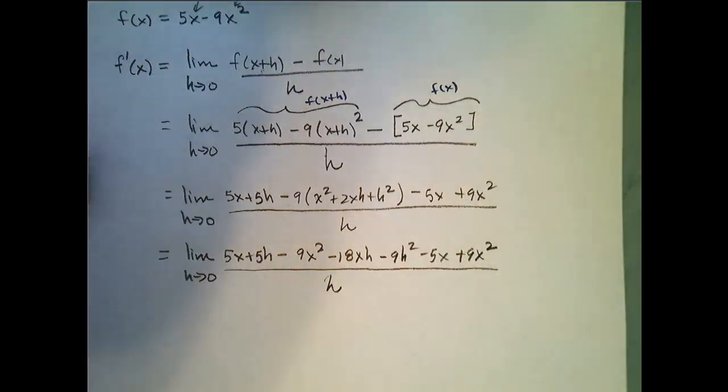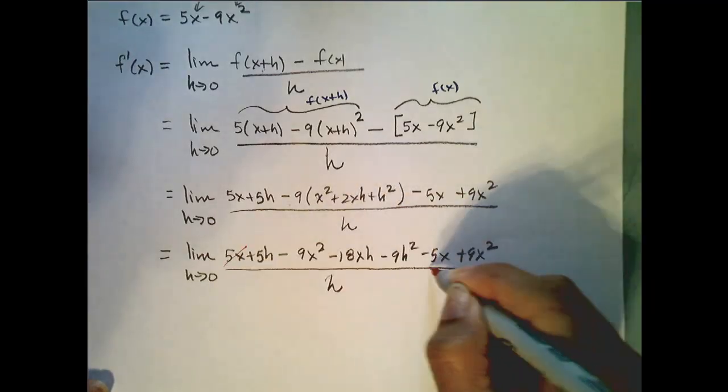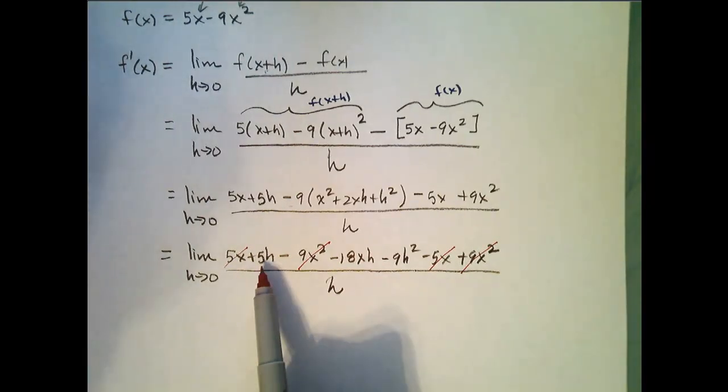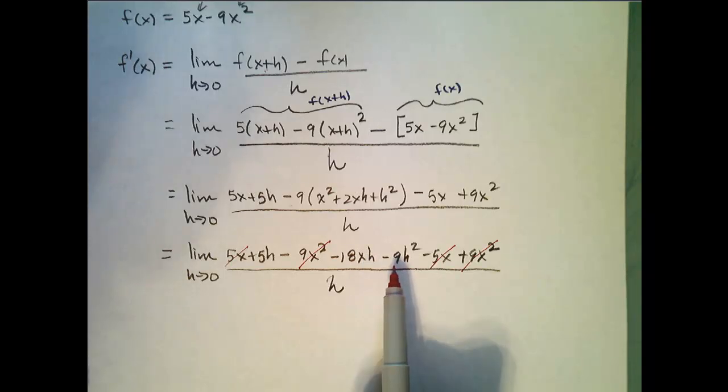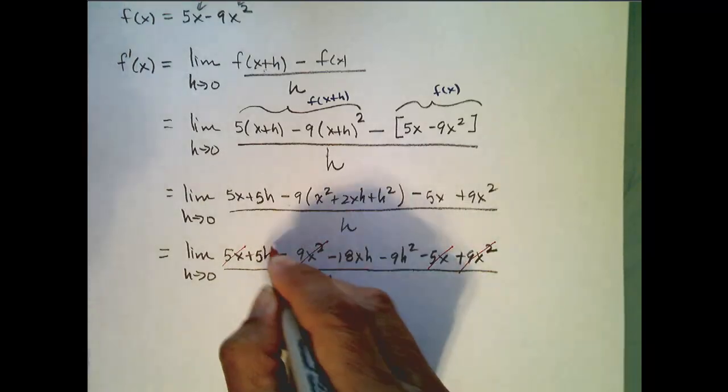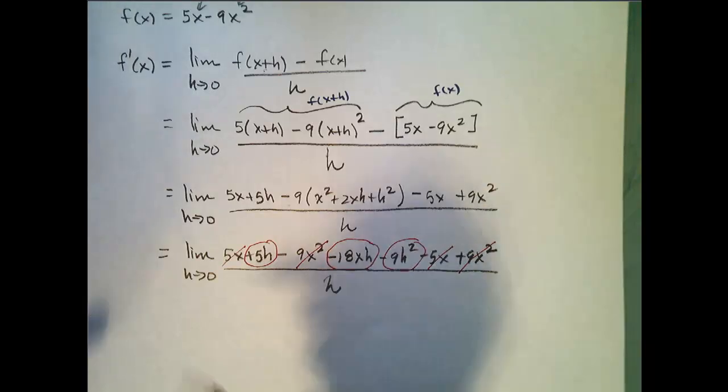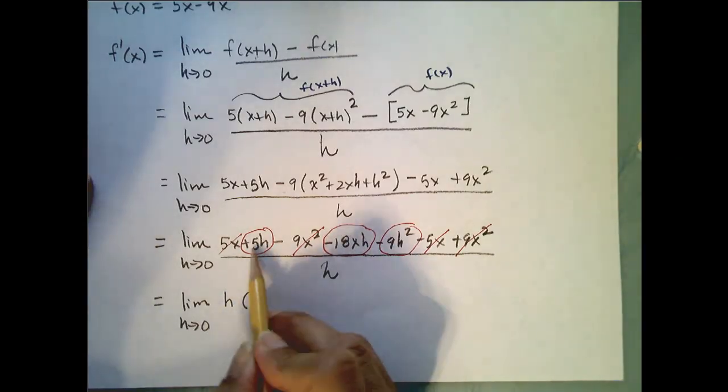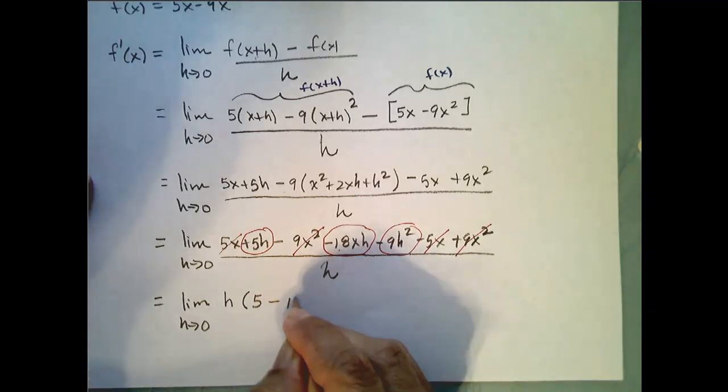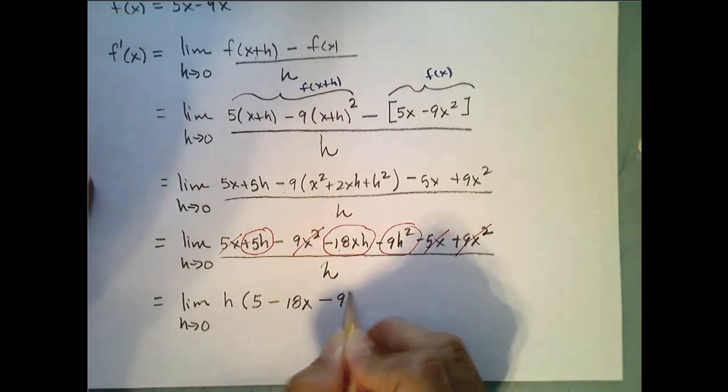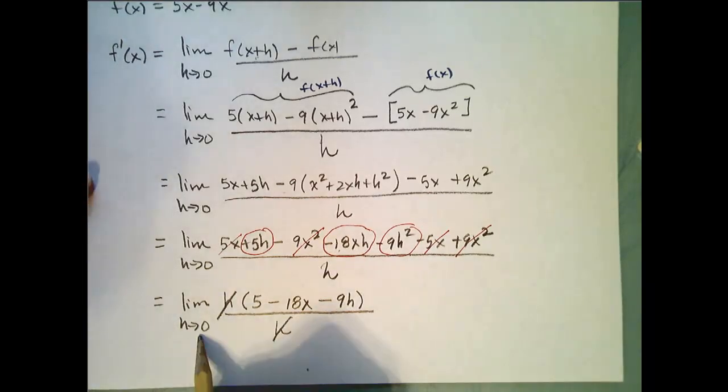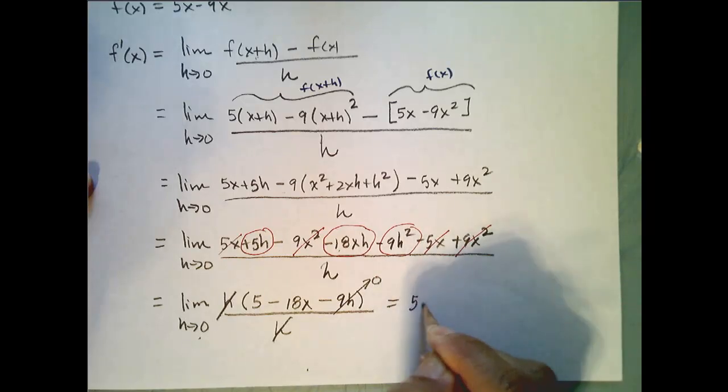Let's combine like terms, and look what happens here. I'm going to use a different color so you can see clearly. The 5x's cancel. The 9x squared's cancel. And I think that's it. So I'm left with 5h minus 18xh minus 9h squared all over h. And if you notice, the remaining terms all have a factor of h. So I'm going to factor that out. So this is the limit as h goes to 0 of h times 5, pulled out the h there, minus 18x minus 9h, all over h. Now, I'm able to cancel those h's, and I'm ready for direct substitution. So this goes off to 0, and I'm left with 5 minus 18x. So this right here is my derivative function.